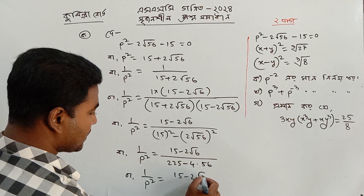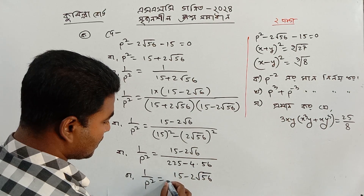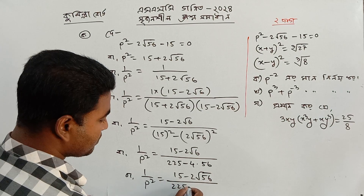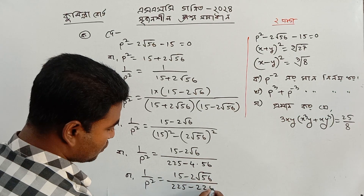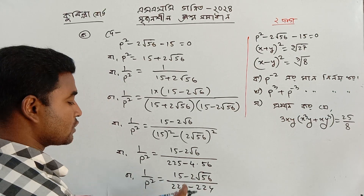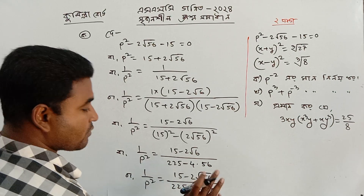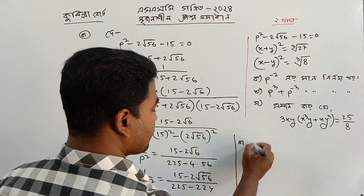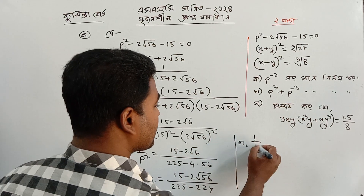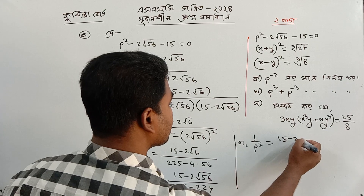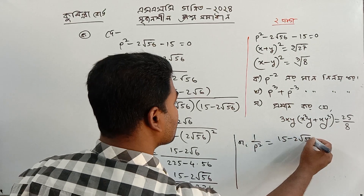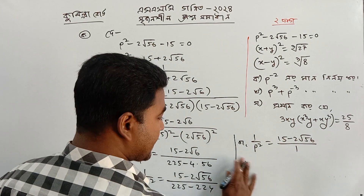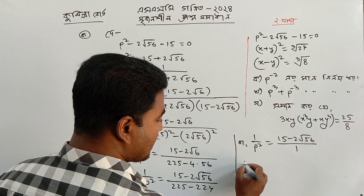So: 1 by p squared equals 15 minus 2 root 56 by 1 — the red line method.